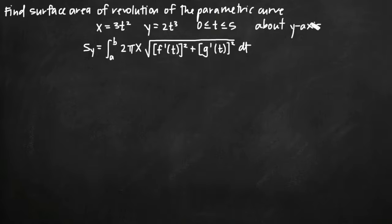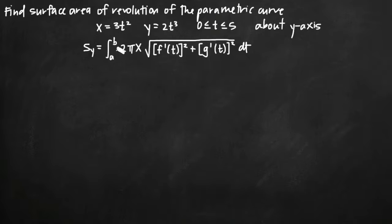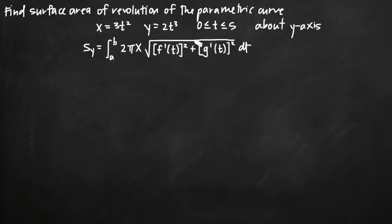Because our axis of rotation is the y-axis, our formula for surface area of revolution has to reflect that. So we say S sub y to denote the surface area rotated around the y-axis, which is equal to the integral from a to b of 2π x times the square root here. The formula is in terms of t, so our limits of integration a and b come directly from the given interval: a equals 0 and b equals 5.